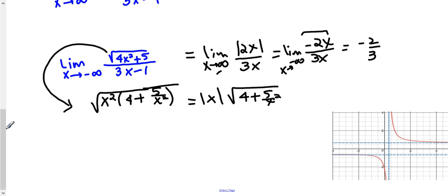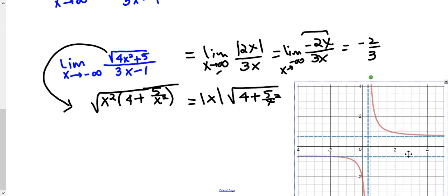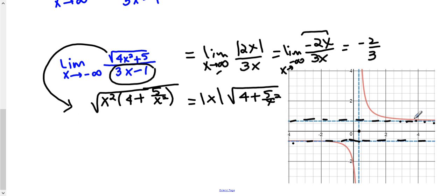To put everything into context and give a visual picture: look at this graph of the radical function. The denominator is 0 when x equals 1 third, so there is a vertical asymptote at x equals 1 third. There are two horizontal asymptotes. As x goes towards negative infinity, the function approaches negative 2 thirds — that is the horizontal asymptote on the left. As x goes to positive infinity, it approaches positive 2 thirds — the horizontal asymptote on the right.